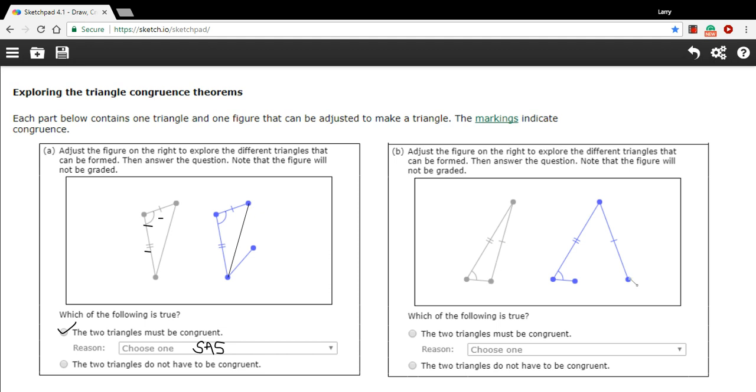So I suppose I could just swing this in and stretch this out until they meet. And I think you can make a triangle there that's not congruent to the first one. It'll look something like that.